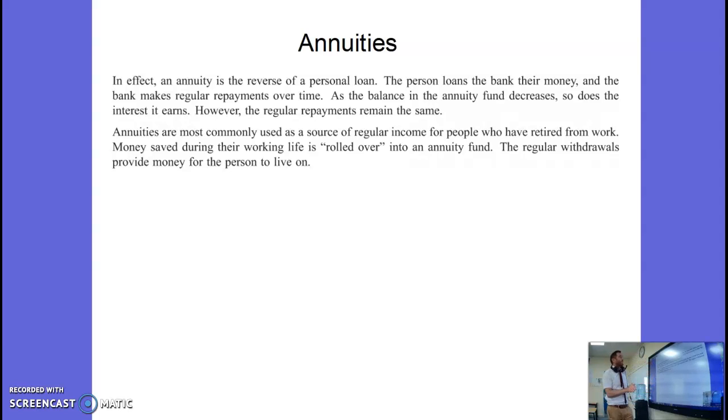As the balance of your annuity decreases so does the interest it earns but you will still get the same regular payments. So you usually set an amount that you want to receive every month. They're most commonly used as a source of regular income for people who've retired kind of goes hand in hand with pensions and money saved during their working life is then pushed into an annuity fund so that they get a regular income when they are no longer working. So that's kind of what annuities are. It's just a series of regular payments. It could be series of regular payments into that account or it could be a series of regular payments to you usually after you've retired.